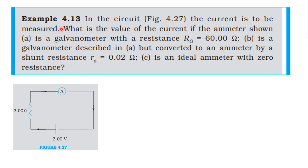From NCERT textbook, from the topic Moving Charges and Magnetism, Example 4.13. In the circuit (Fig. 4.27), the current is to be measured. What is the value of the current if the ammeter shown is: (a) a galvanometer with resistance Rg = 60.00 Ω; (b) a galvanometer converted to an ammeter by a shunt resistance rs = 0.02 Ω.